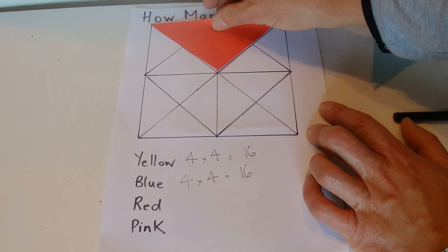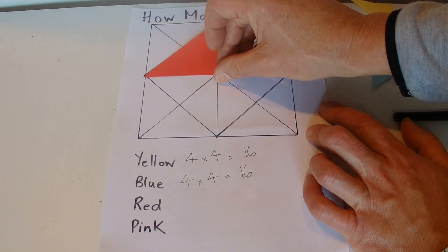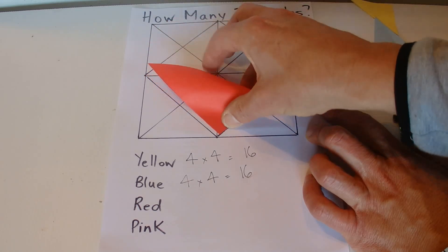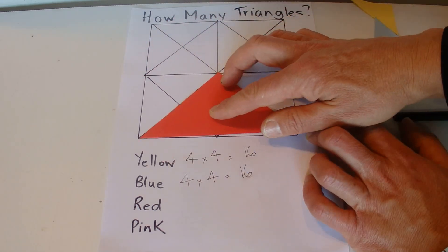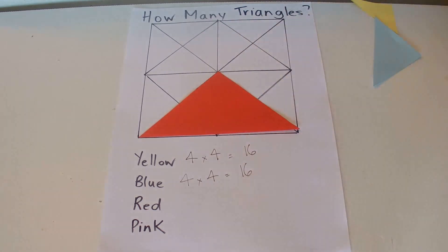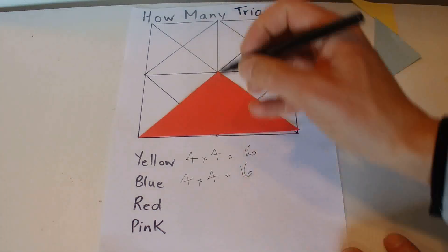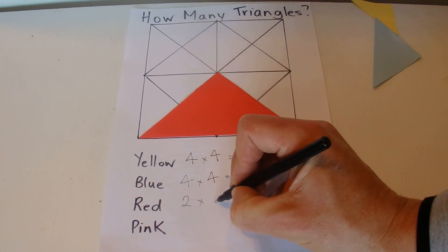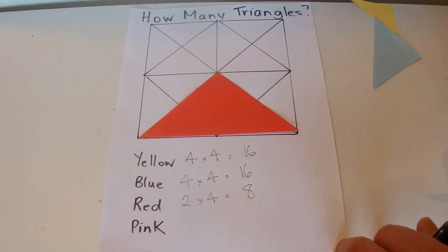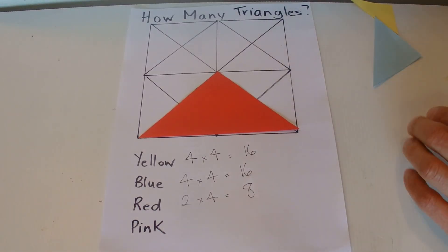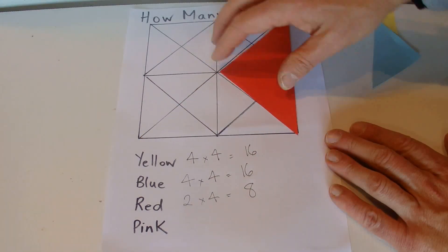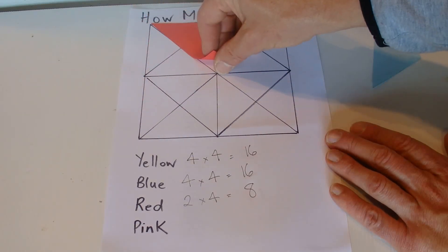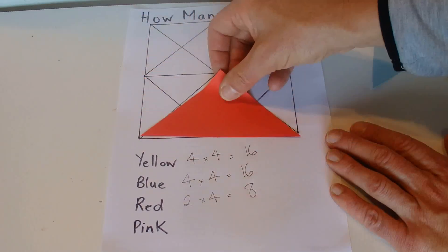But also we've also got another four going the other way. You've got one there, one, two, three, and four. So for the red ones, the big red ones, we've got two sections and we've got four in each section, so that means we've got eight of the red triangles. We had four going that way, and then we had four, two, three, four going that way.